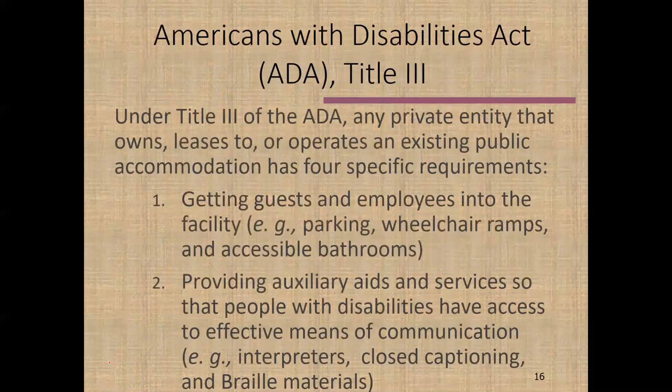The Americans with Disabilities Act, which we discussed before from the context of the employee and the duty to reasonably accommodate the employee's disability, also gives us responsibilities to guests — both in the hotel context and in restaurant and bar scenarios. There are four big categories we're focusing on. First, we have to be able to get individuals into our facility. Disabled people can arrive in many ways just like able-bodied people, so we need to make sure there are designated parking spaces in the required locations.